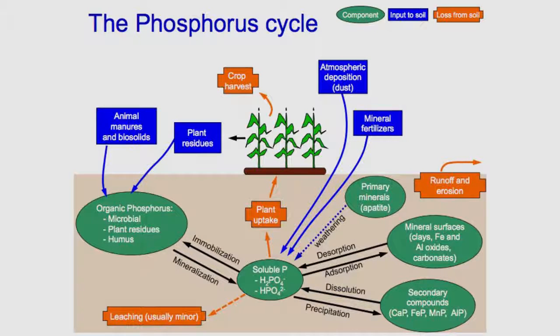Human interference in the phosphorus cycle occurs by overuse or careless use of phosphorus fertilizers. This results in increased amounts of phosphorus as pollutants in bodies of water resulting in eutrophication.